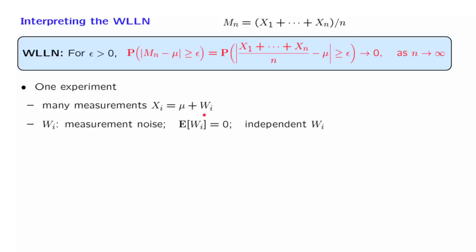And then we take those measurements and form the average of them. What the weak law of large numbers tells us is that the sample mean is unlikely to be far off from the true mean. And by far off, we mean at least epsilon distance away.